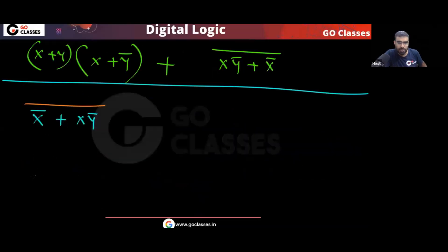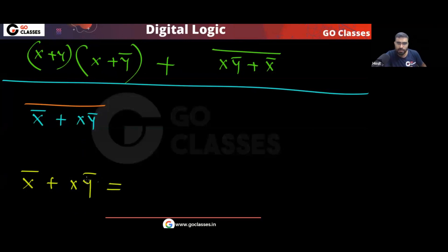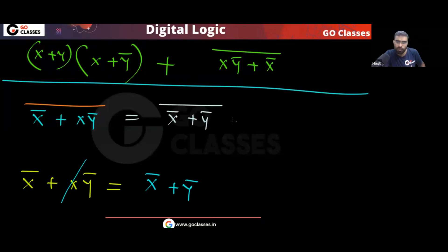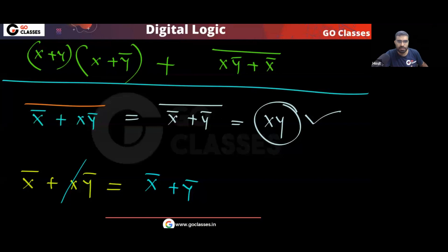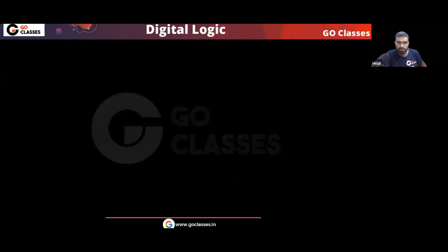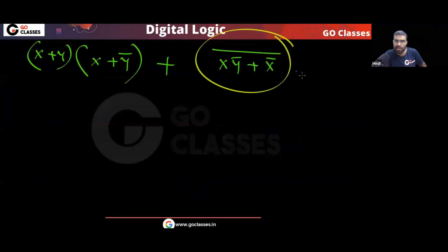Now let's come back to the problem. We have X̄ + X·Ȳ. Applying our property, we can remove X, giving X̄ + Ȳ. We can write this as (X̄ + Ȳ) whole bar — wait, applying De Morgan's law to X̄ + Ȳ: that becomes X·Y. So this expression simplifies to XY.